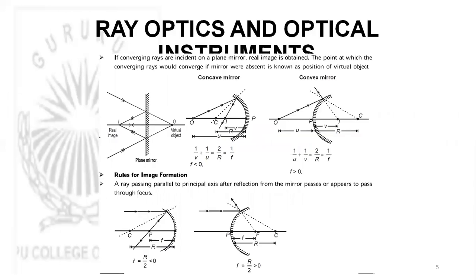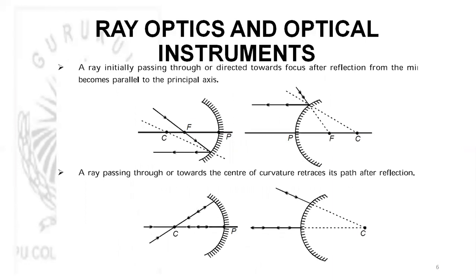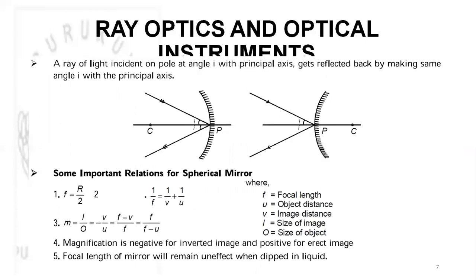For spherical mirrors, there are two types: concave and convex mirror. There are four rules for image formation. A ray parallel to the principal axis will pass through the focus; a ray passing through the focus will become parallel to the principal axis after reflection; a ray passing through the center of curvature will retrace its own path; and a ray incident at the pole at angle i will be reflected at the same angle. The point where these four rays meet is the image formation point.